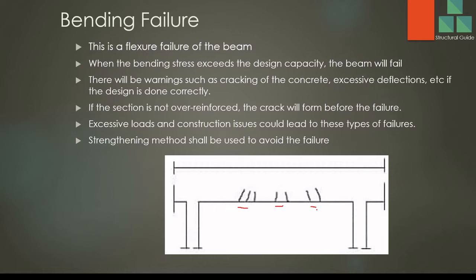But if the section is over-designed and the reinforcement does not yield, there may be an issue — this kind of failure would happen suddenly. If the bending capacity is exceeded by the bending moment applied by the loading, the beam could fail. We could use strengthening methods. If you notice the cracks, we may use different kinds of strengthening methods — maybe added support, fixing steel plates, or putting in an I-beam. There are methods we can use to rectify this.